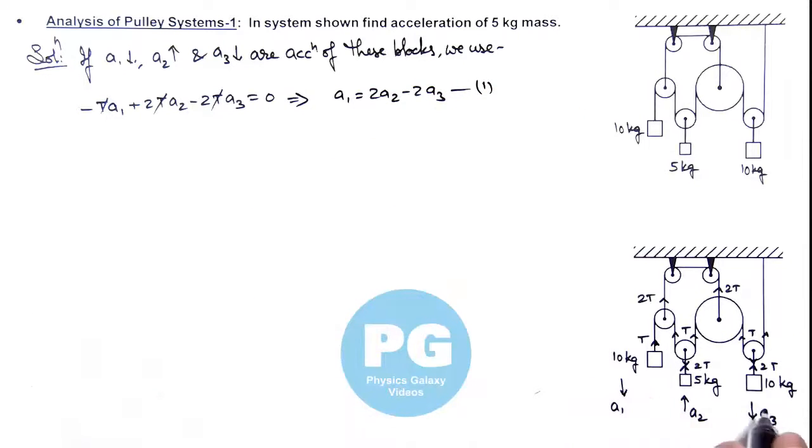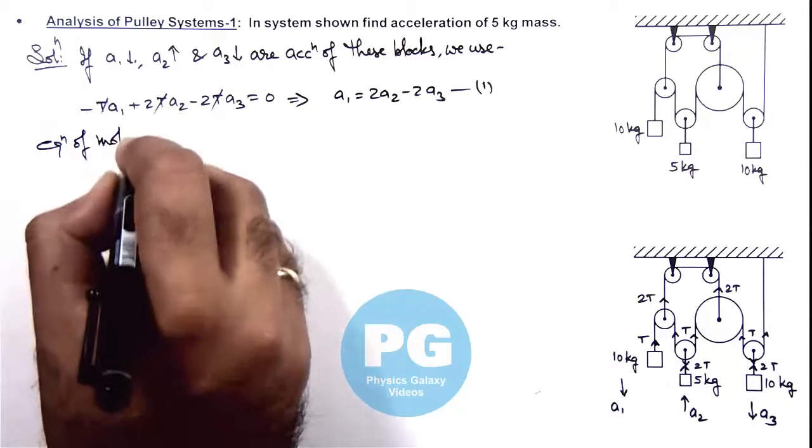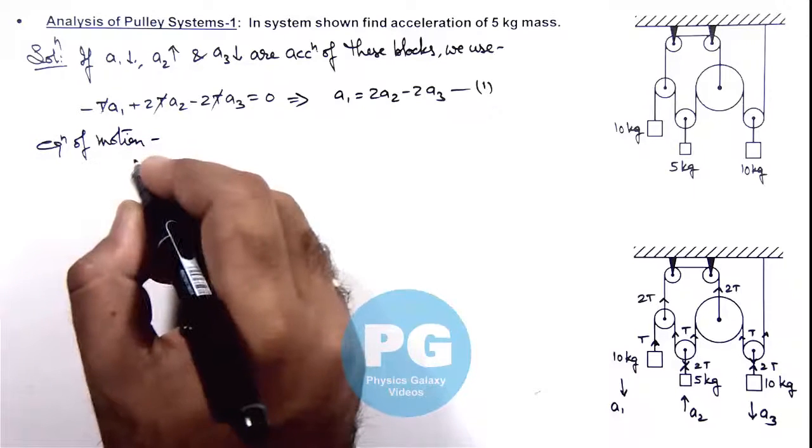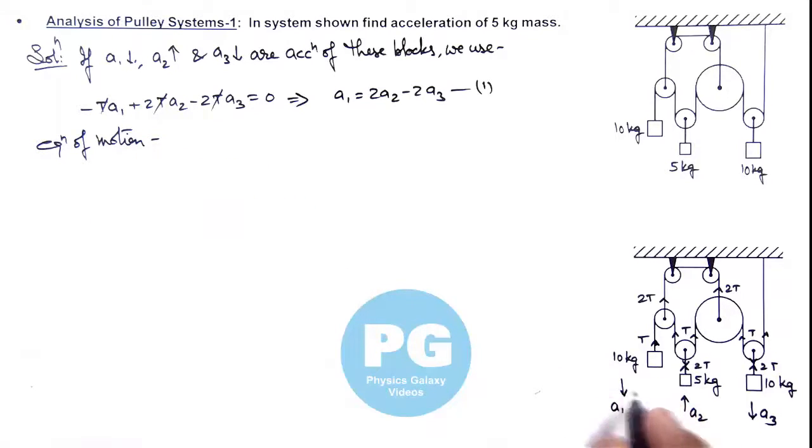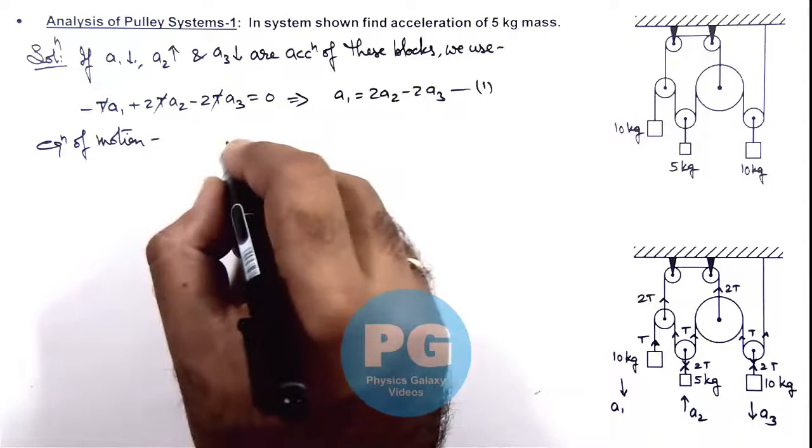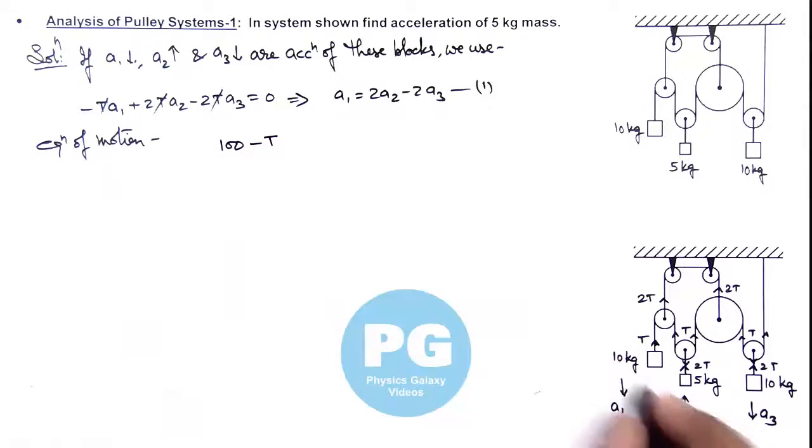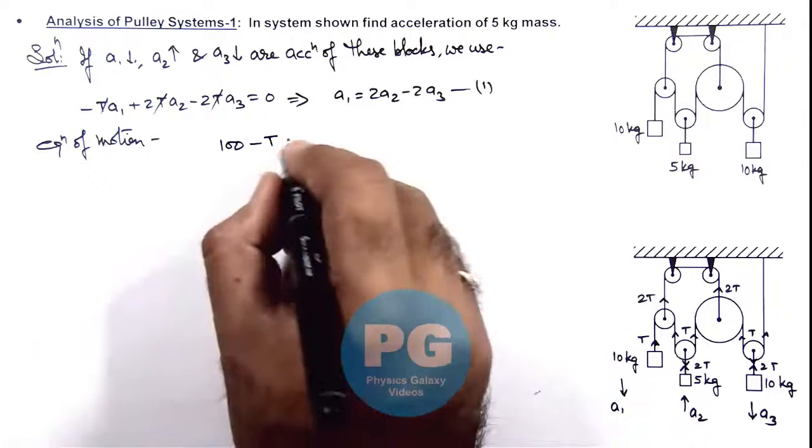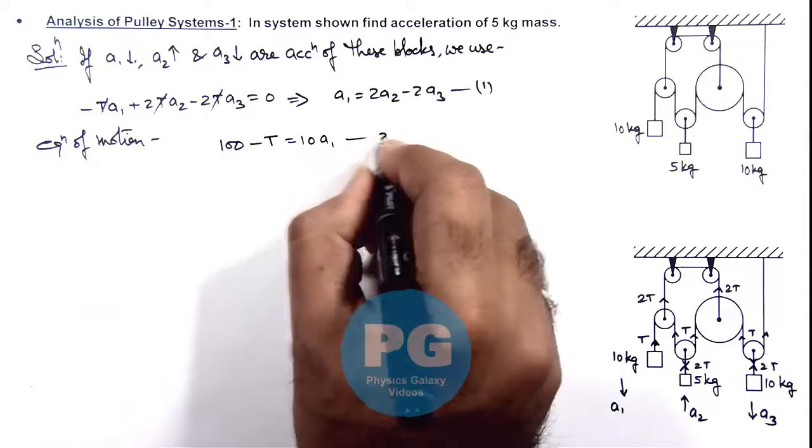Now we can write down the equations of motion for the three blocks. For the 10 kg block going down, we can write: 100 minus T equals 10a_y1, where 10g is the weight acting on it. That is equation 2.